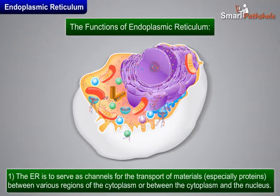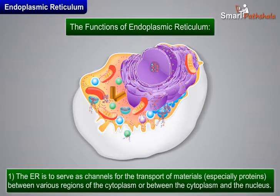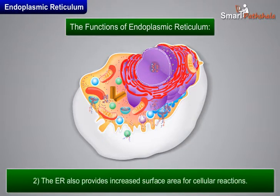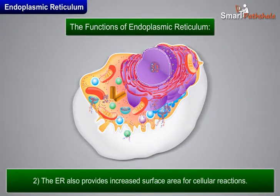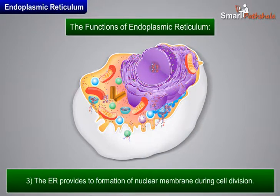The ER also provides an increased surface area for cellular reactions. Additionally, the ER provides for the formation of the nuclear membrane during cell division.